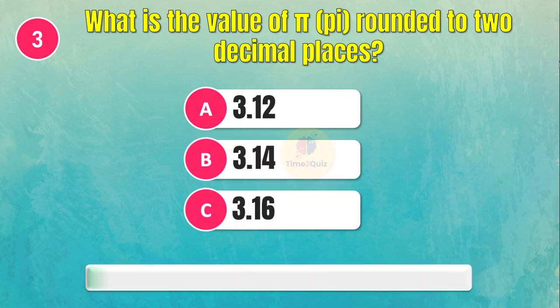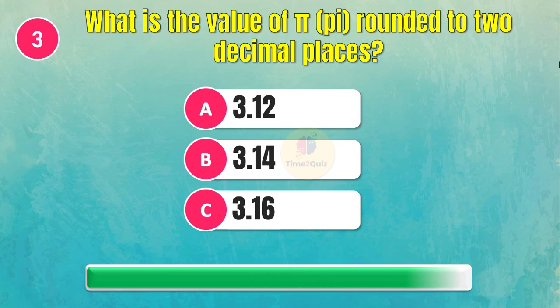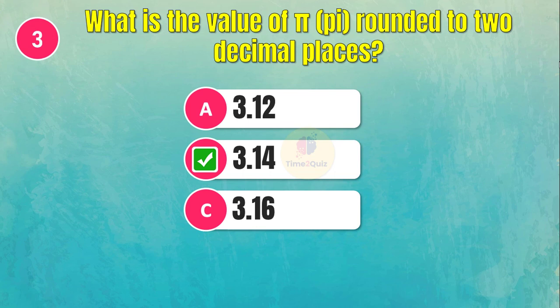Question three: What is the value of π (pi) rounded to two decimal places? The answer is 3.14.